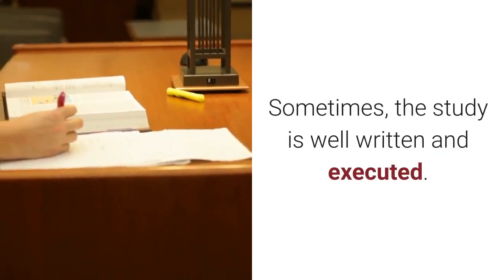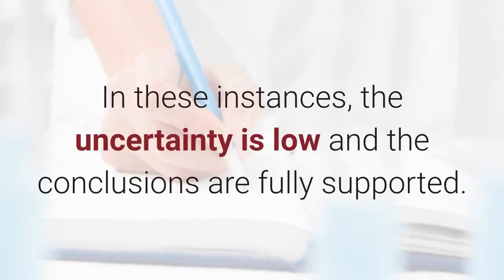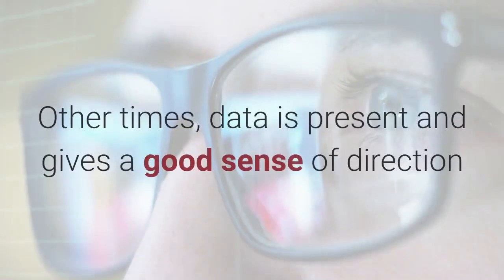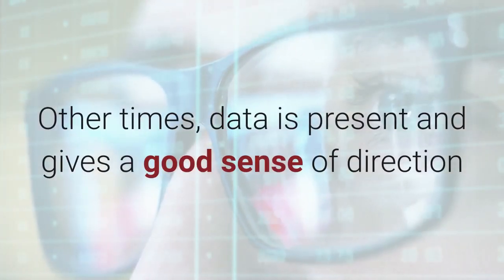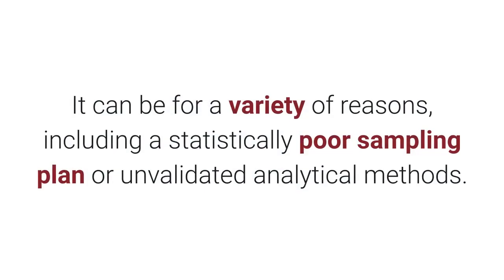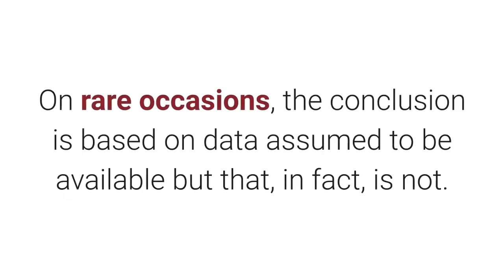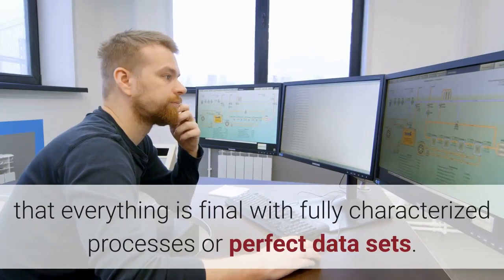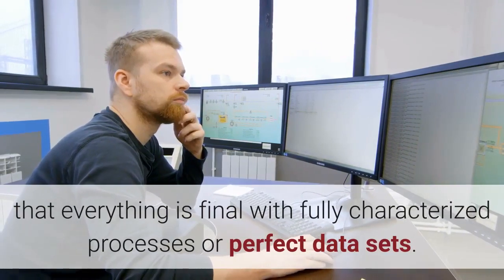Sometimes the study is well written and executed. In these instances, the uncertainty is low and the conclusions are fully supported. Other times, data is present and gives a good sense of direction, but does not suffice for the final data. It can be for a variety of reasons, including a statistically poor sampling plan or unvalidated analytical methods. On rare occasions, the conclusion is based on data assumed to be available, but that, in fact, is not. It is not the expectation that everything is final with fully characterized processes or perfect data sets.